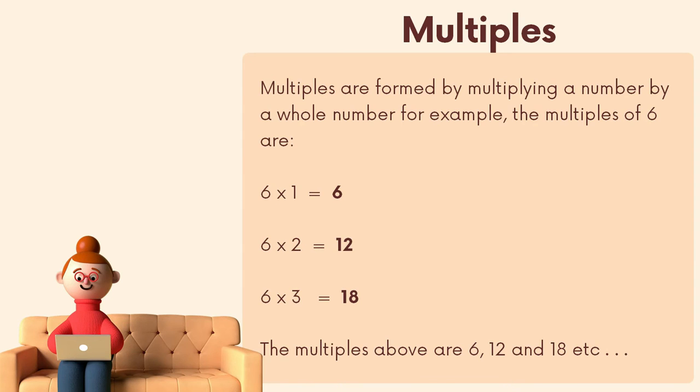Multiples are formed by multiplying a number by a whole number. For example, the multiples of six are: six times one equals six, six times two equals twelve, six times three equals eighteen, and so on. Therefore the multiples of six are six, twelve, eighteen, onwards.